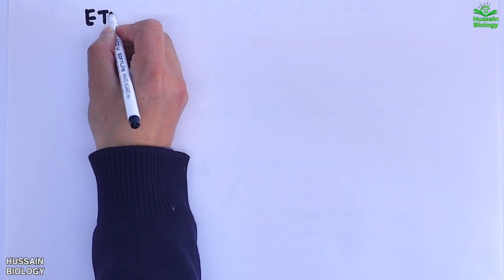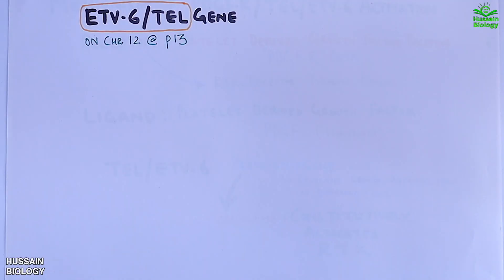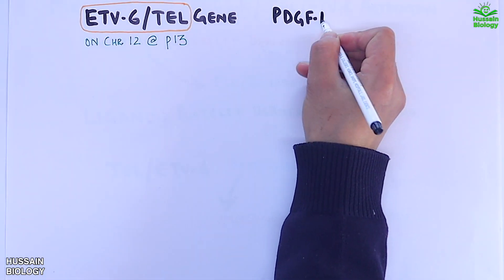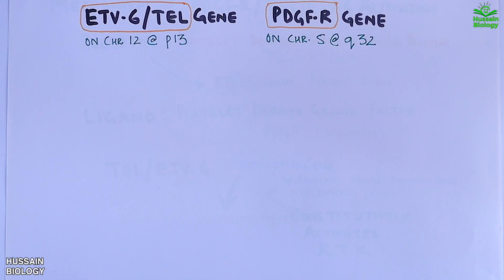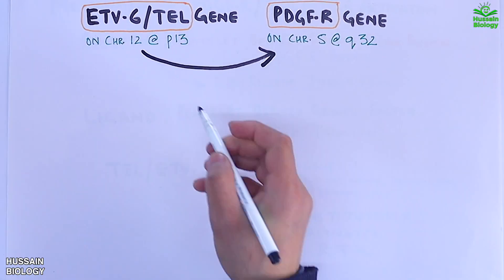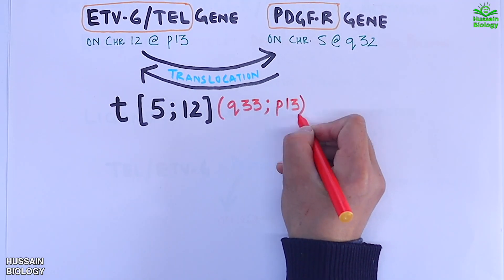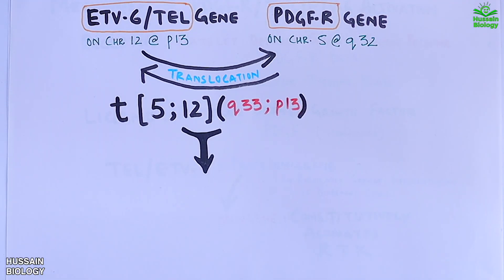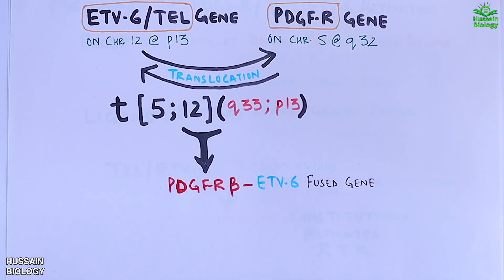Let's see the mechanism which turns this proto-oncogene into an oncogene. The ETV6 or TEL gene is present on chromosome 12 at the P13 position, and the PDGFR gene is on chromosome 5 at the Q32 position. What happens is a chromosomal translocation between these two genes, referred to as the T(5;12) translocation with positions Q33 and P13, giving us the PDGFR-beta-ETV6 fusion gene, which is the oncogene.